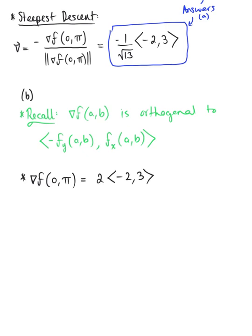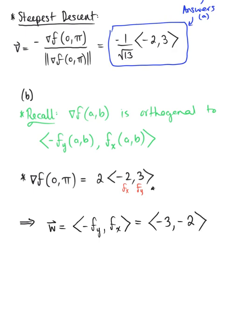Treating negative 2 as the partial derivative with respect to x and 3 as the partial derivative with respect to y, we can define vector w as the vector with components: negative the partial derivative with respect to y, and the partial derivative with respect to x. Plugging in, we get the vector with components negative 3 and negative 2. This is our final answer — a vector pointing in the direction where the function has no change.